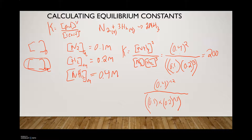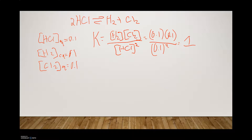Looking back at the Haber process example, K = 200, which is greater than 1, meaning the products are more favored and the equilibrium lies to the right. In the HCl example, K = 1, so neither side is favored. The key takeaways are: know your equilibrium concentrations, write the expression correctly, and input the values carefully.